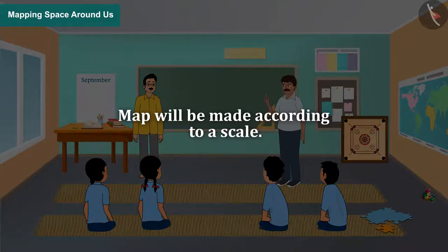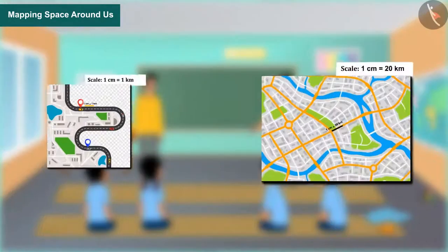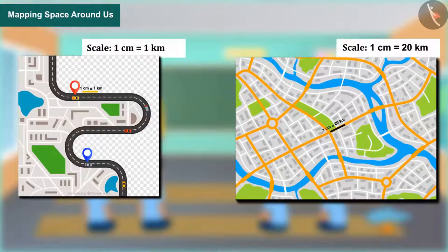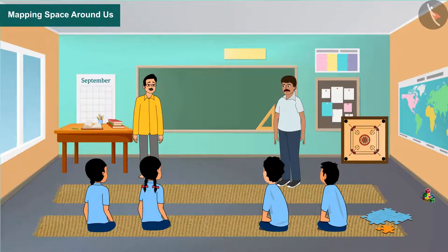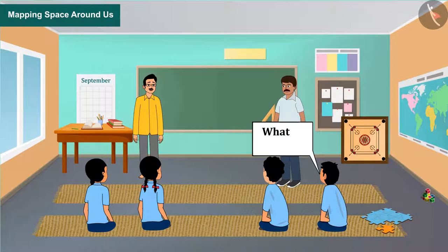In the scale, we will show distances by lines. To do this, we need the length and width of the floor and the height of the room. To make a class map, we have to first set the scale. But what is a scale?